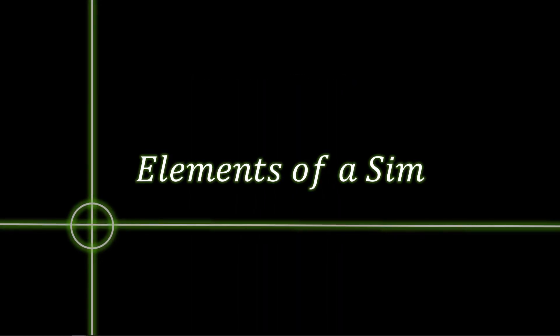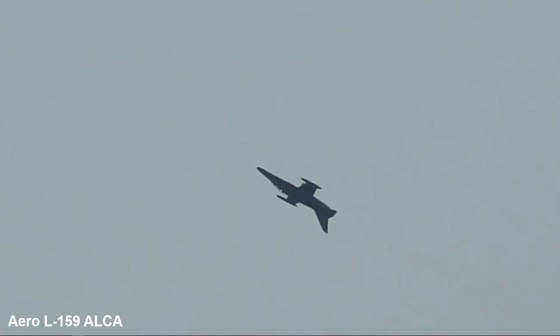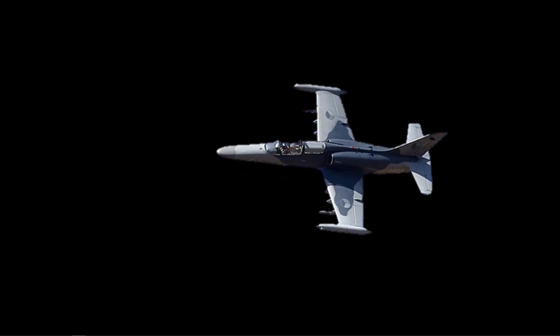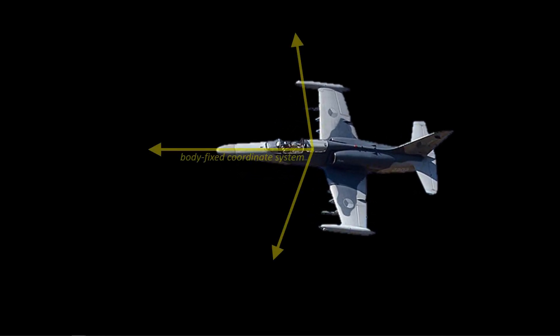What are the essential components of an aircraft simulation in our three-dimensional world? At its core are the governing equations of motion. To describe aircraft motion, it becomes necessary to specify a coordinate system in the aircraft frame of reference, such as this body-fix coordinate system. We will also need a coordinate system in an earth reference frame, such as this inertial coordinate system.